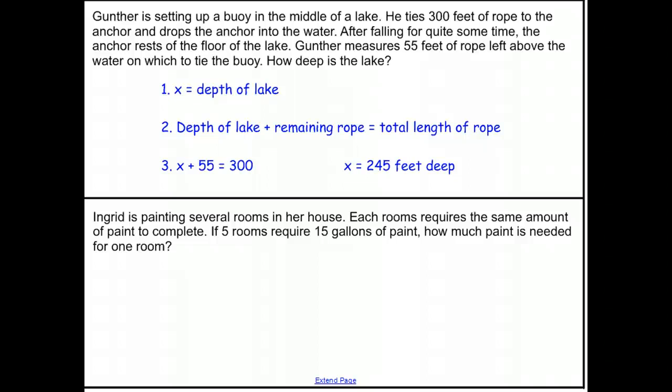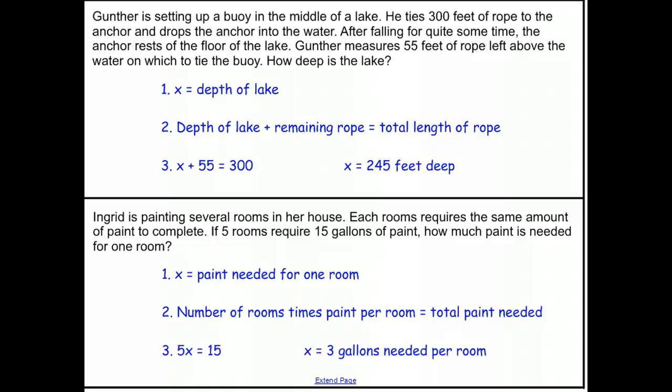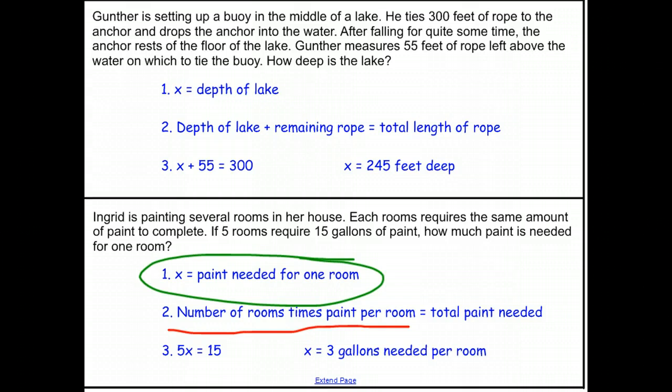For Ingrid's room painting, if every room required, if five rooms require 15 gallons of paint, our question then is, how much paint is needed for one room? Well, in any case, no matter what we're doing, the number of rooms times the amount of paint per room gives us the total amount of paint needed. So 5 times x is equal to 15, and in this case, x is equal to 3 gallons needed per room.